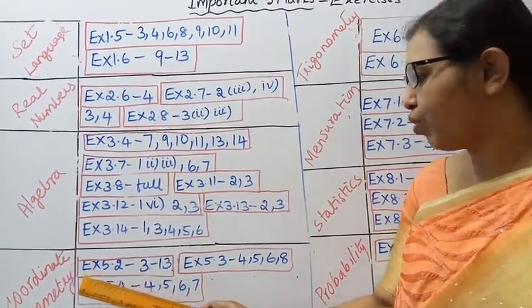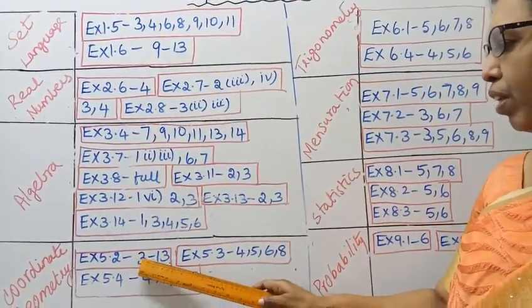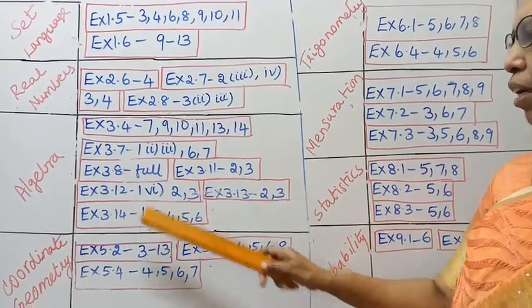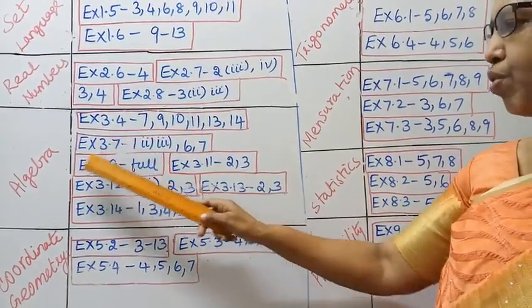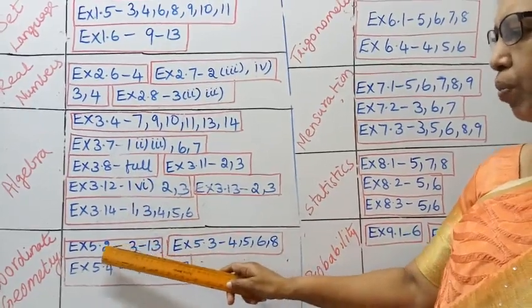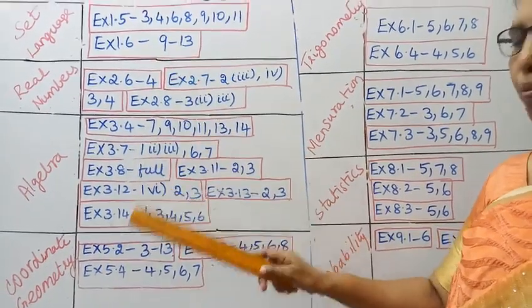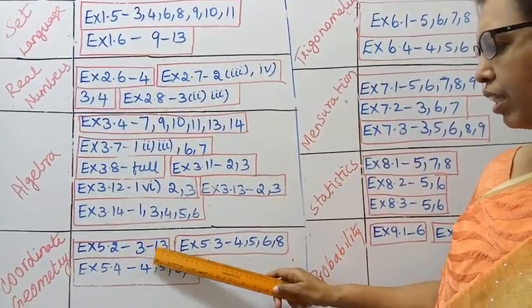Coordinate geometry. Exercise 5.2: problem 3 through 13. All these sums are important.